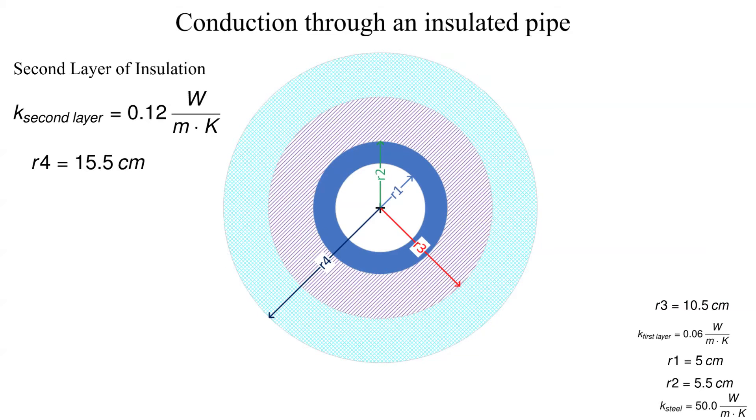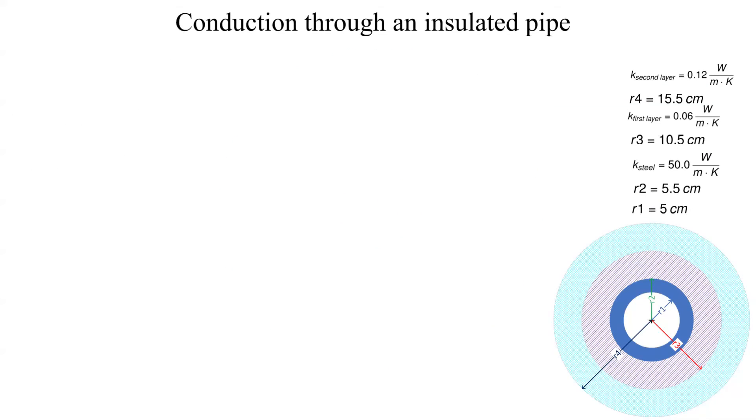We will need two boundary conditions. In this example, the temperature on the inside of the pipe wall is 225 degrees Celsius. The outer surface temperature is 25 degrees Celsius.